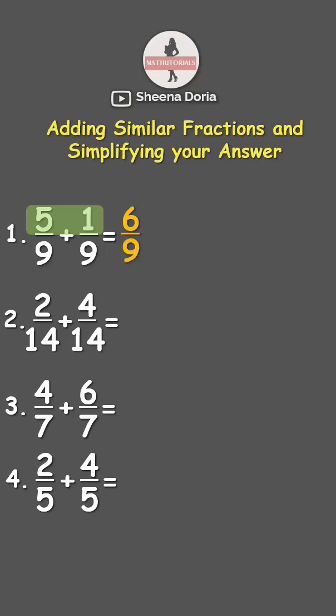Here, we can still divide 6 and 9 by their GCF which is 3. 6 divided by 3 is 1, while 9 divided by 3 is 3. Answer: 1/3.